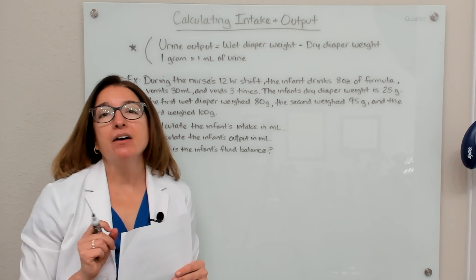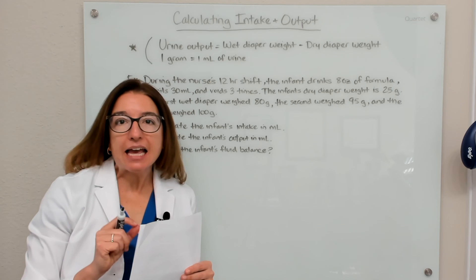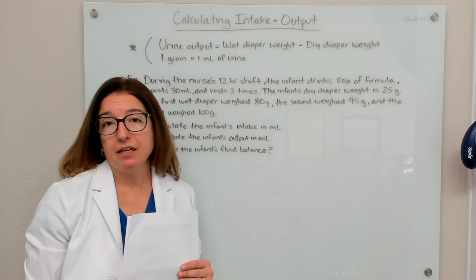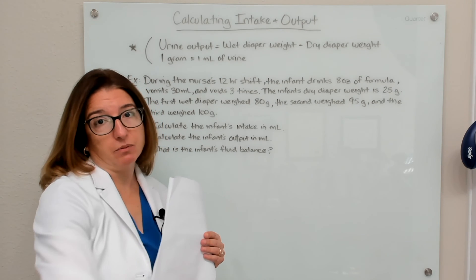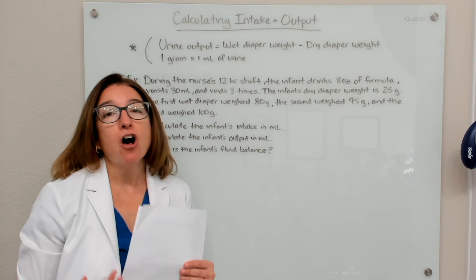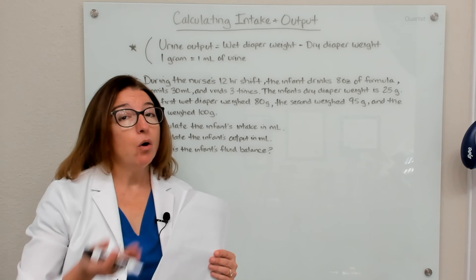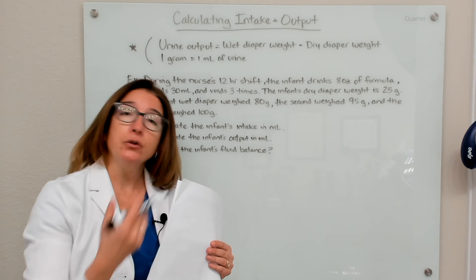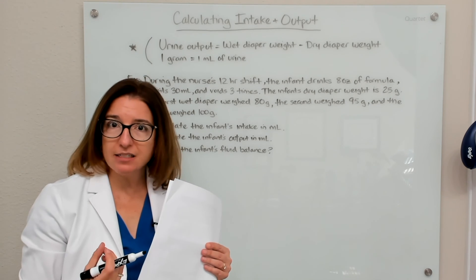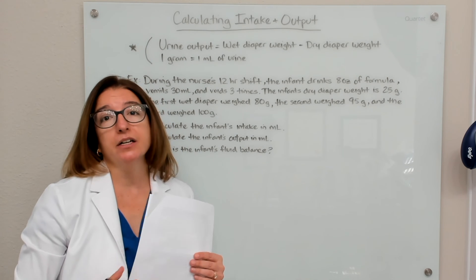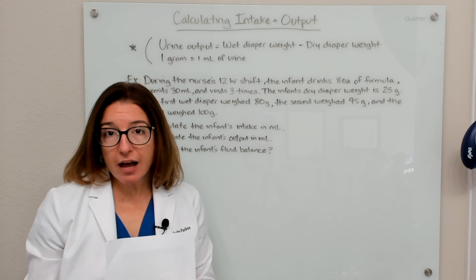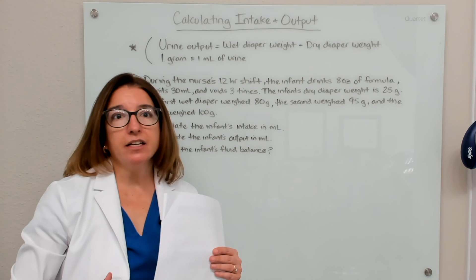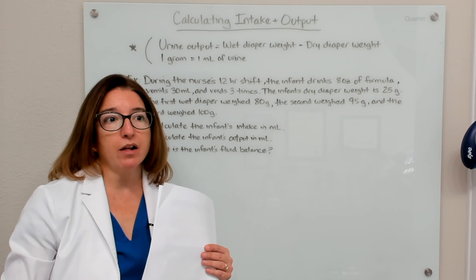Let's now talk about calculating the intake and output for a pediatric patient. It works in much the same way as we did with adults. We want to make sure we are considering all forms of intake - oral intake, IV fluid, and IV medication intake - and all forms of output, including urine output, wound drainage, chest tube drainage, as well as emesis.